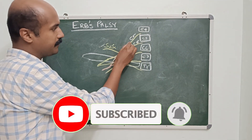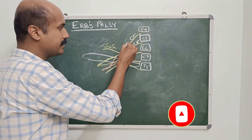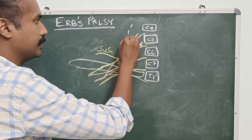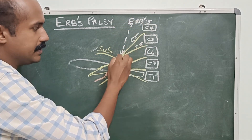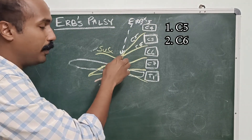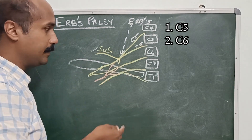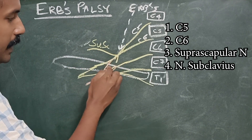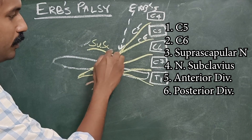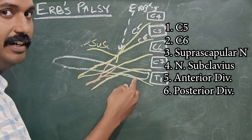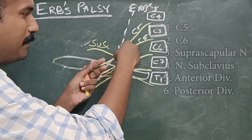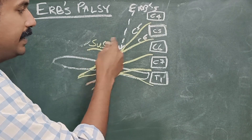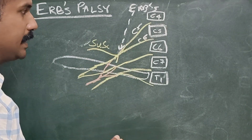This is the upper trunk which is formed by C5 and C6 roots of the brachial plexus, and the point where C5 and C6 meet is the ERB's point. ERB's point is where C5 and C6 meet. Some authors say that ERB's point is where six nerves meet — that is also true, because this is the point where the suprascapular nerve comes out, the nerve to subclavius, the anterior division, and the posterior division. So altogether you have six nerves meeting at this point, with C5 and C6 forming the trunk and the other four nerves branching out.